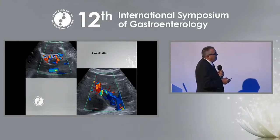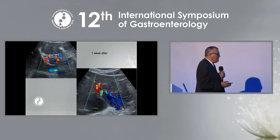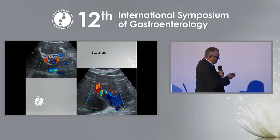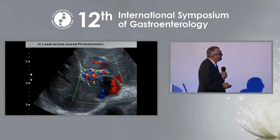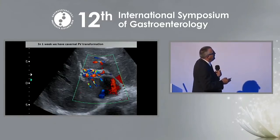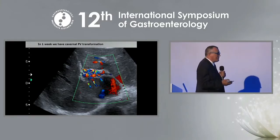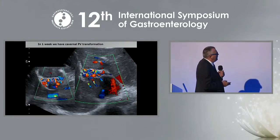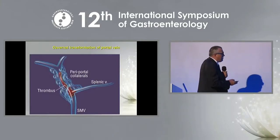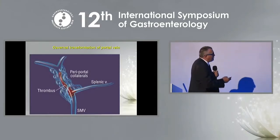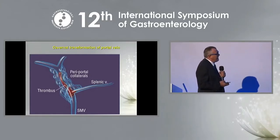Porto-portal collaterals appear very quickly. Some experts say they take four to eight months to develop, but sometimes collateral blood flow can be seen within one week. These collaterals form around the thrombus, and some experts call them worm-forming collaterals.